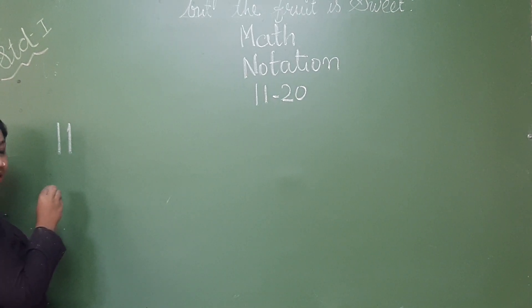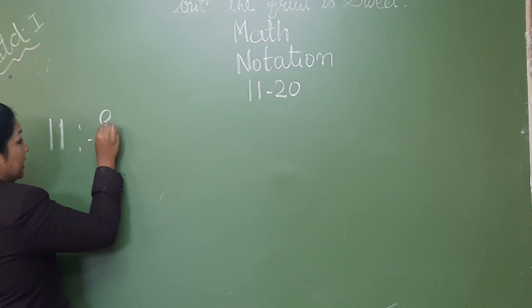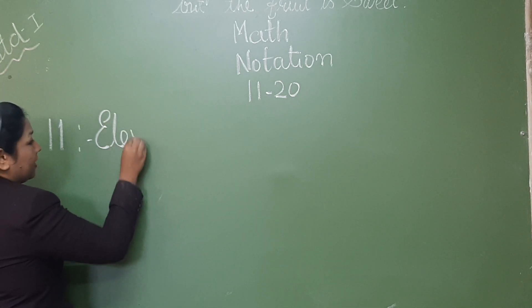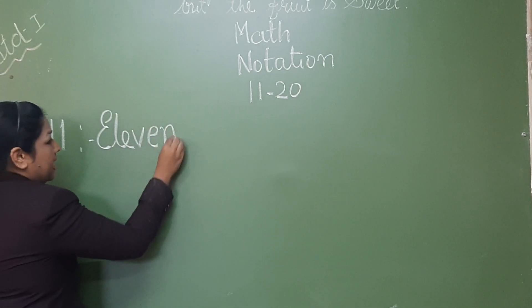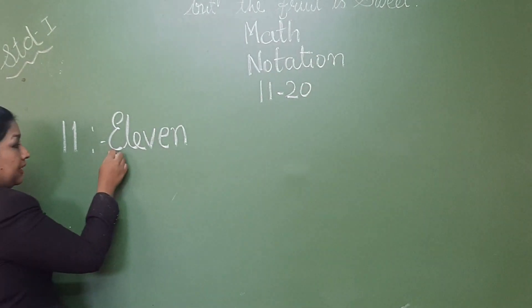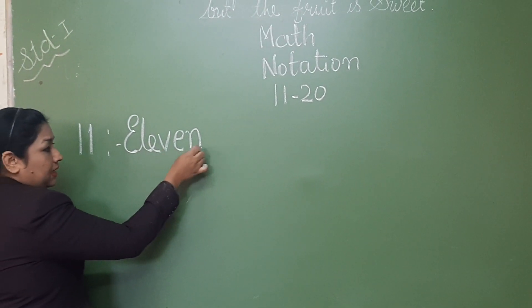1, 1, 11, write. E, L, E, V, E, N, 11. E, L, E, V, E, N, 11.